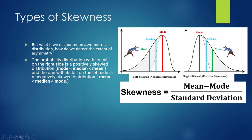Mathematically, skewness is calculated as mean minus mode divided by standard deviation. If the mean is to the right of the mode, mean minus mode gives a positive value — that's why it's called a positive skew distribution.